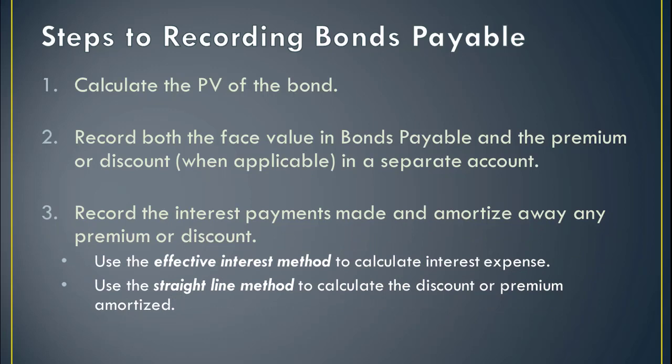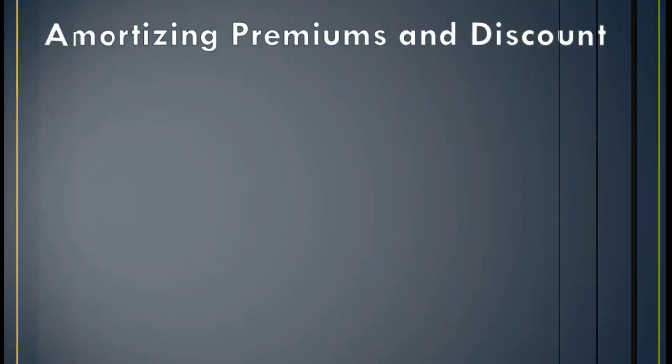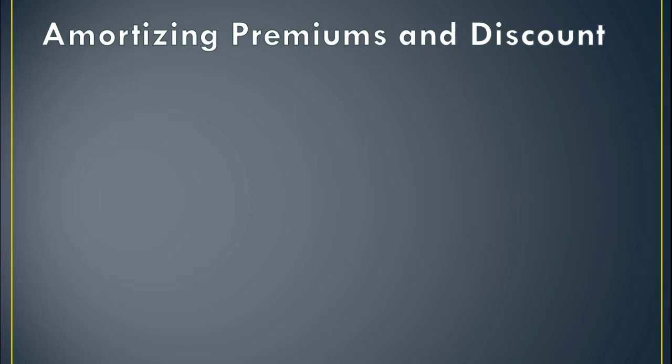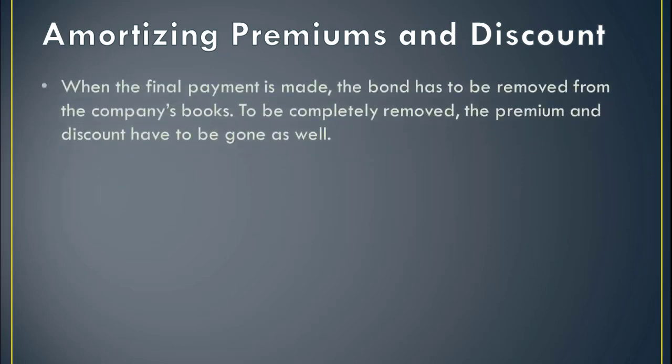We'll amortize any premium or discount as part of those journal entries. We can use the effective interest method to calculate interest expense and then back into the amount of premium or discount amortized. Or we can use the straight-line method — figure out the amount of discount or premium amortized and then back into interest expense. Let's take a second and talk about this amortization in a little more detail. I know it tends to be a topic that's challenging the first couple times through, so it's probably a good idea to spend some extra time with it.